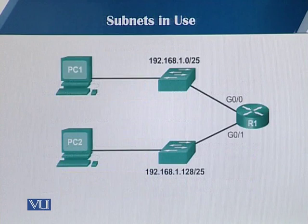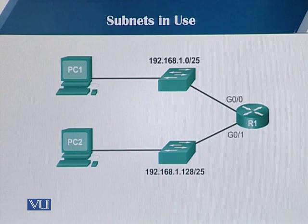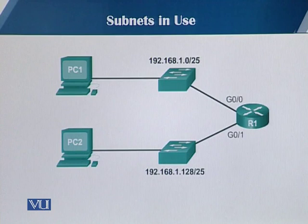In this particular network, router R1 has two interfaces connected to two LAN segments on its gigabit interface 0 and interface 1. Each LAN segment has only one machine connected to it.